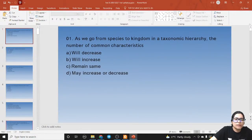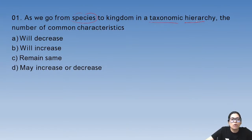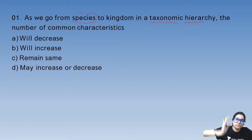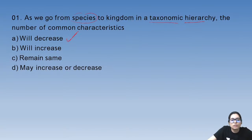Let's start with question number 1. As we go from species to kingdom in a taxonomic hierarchy, the number of common characters will — the answer is: common characters decrease. Species is more specific, kingdom is less specific.